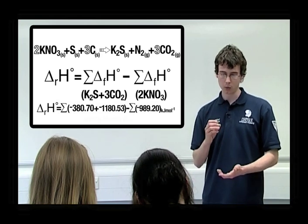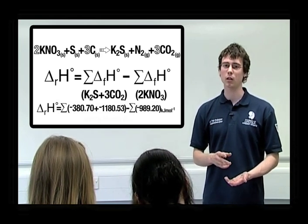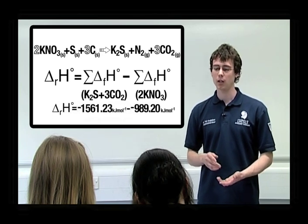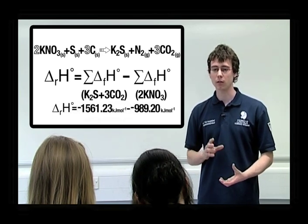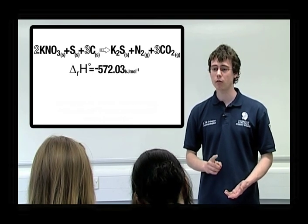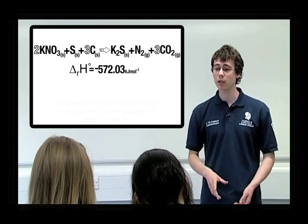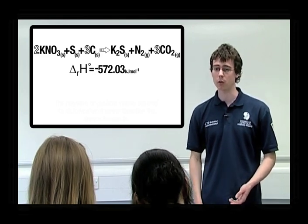Right. We can now work out the equation and put the standard enthalpy of reaction at the end. Okay. Now, if we work it out, we get the reaction value as being minus 572.03 kilojoules per mole. We've now got everything we need to complete our thermochemical equation.